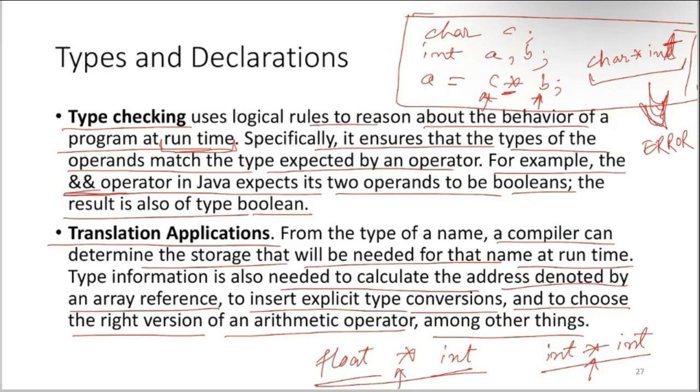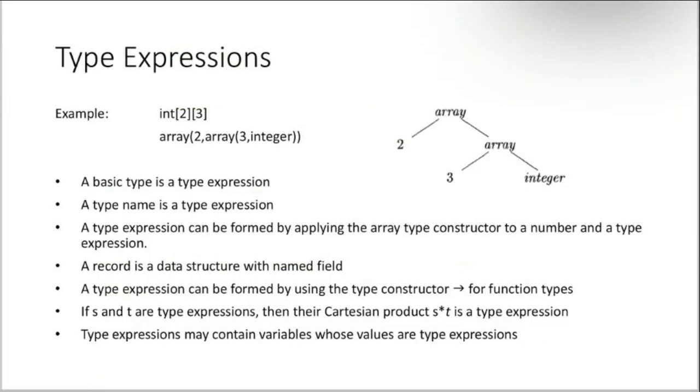Type expressions: like if you see here int [2][3], that means it is saying that a two-dimensional array is there which is having two rows and three columns. It is basically an array of two arrays which are having three elements which are integer. So it can be given by a syntax tree like array two three are the size and this is the type. The basic type is a type expression. A type name is a type expression, like integer is a type name, so that is a type expression.